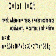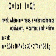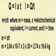Q is equal to I times T. Therefore, I is equal to Q divided by T.